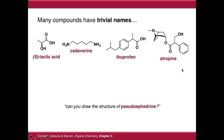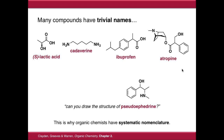This doesn't really help us when you come across a name that you haven't encountered before. For example, can you draw the structure of pseudoephedrine? How would you know from the name pseudoephedrine that this was the chemical structure? Well, this is why we use what's called systematic nomenclature.